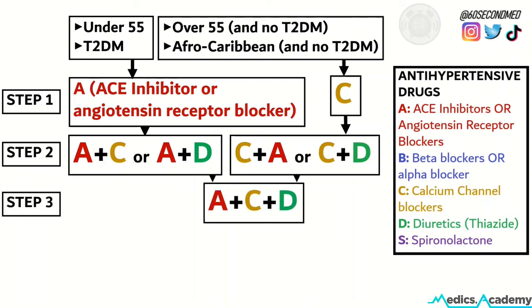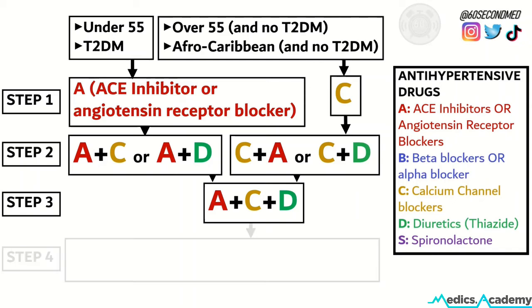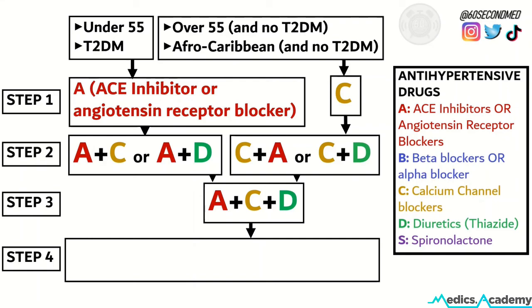Step 3, and they're still hypertensive, it's time for triple therapy of an ACE inhibitor or angiotensin receptor blocker, calcium channel blocker, and diuretic. And if they're still hypertensive, they're now into resistant hypertension.